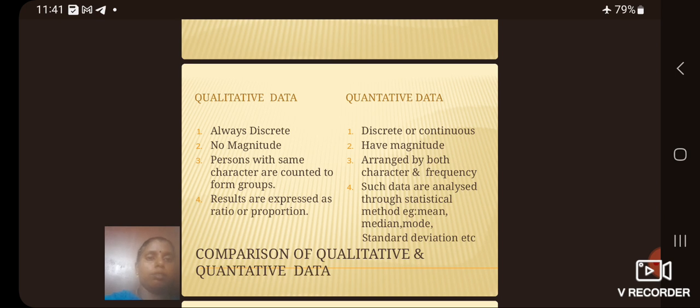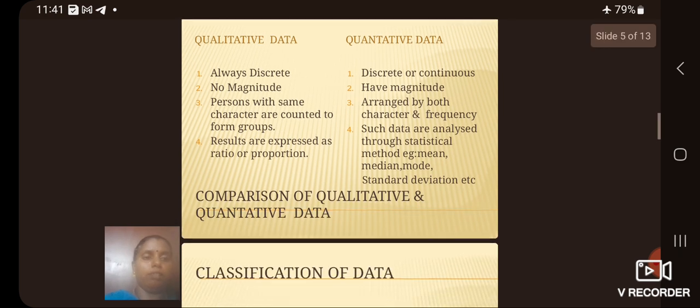Qualitative data has no magnitude. Quantitative data has magnitude. In qualitative data, persons with same character are counted to form groups. In quantitative data, arranged by both character and frequency. Results are expressed as ratio or proportion. In quantitative data, statistical methods are used, for example: mean, median, mode, standard deviation, etc.